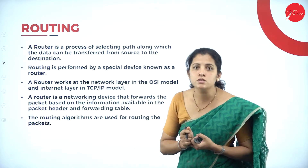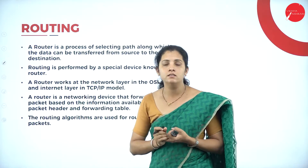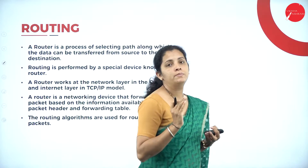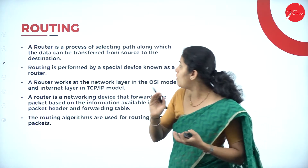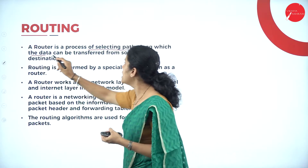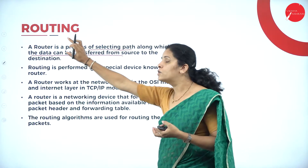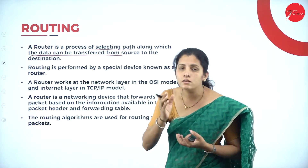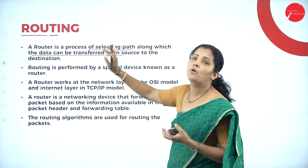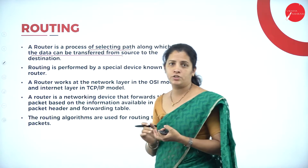Routing is a process of finding the optimal — that is the shortest — path among all the possible paths. It is a process of finding or selecting a path among which the data can be transferred from source to destination. In other words, routing is a mechanism mainly used to select the path among all possible paths to transfer data from the source device to the destination device.